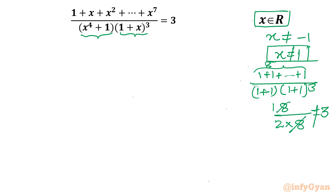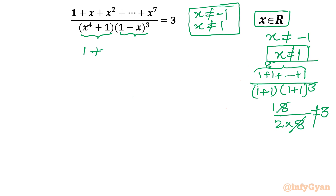So the conclusion is x cannot be equal to negative 1, and x cannot be equal to 1 either. Now for the numerator 1 plus x plus x² plus x³ up to x⁷, I will demonstrate two methods. The first method uses GP — geometric progression.